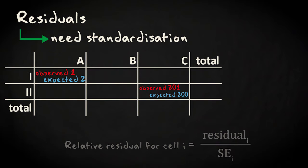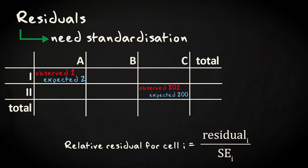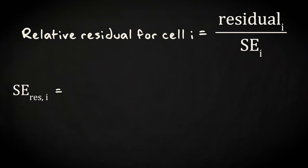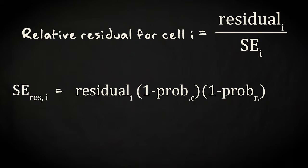If we divide the residual with the standard error for the sampling distribution of the residual, we would get what we want. This standard error is calculated by multiplication of the expected counts in a cell with 1 minus its marginal column probability and with 1 minus its marginal row probability, and subsequently taking the square root.